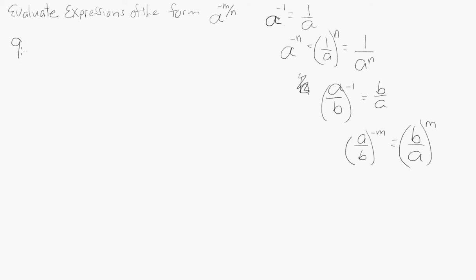9 to the negative 3 halves equals 1 over 9 to the positive 3 halves. Using this right here, the negative n right there.